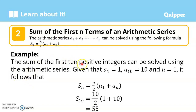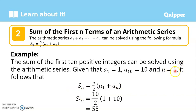Example: the sum of the first 10 positive integers can be solved using the arithmetic series formula. Given that A sub 1 equals 1, A sub 10 equals 10, and n equals 10, it follows that S sub n equals n over 2 times (A sub 1 plus A sub n). So we are looking for the first 10 positive integers: 1, 2, 3, 4, 5, 6, 7, 8, 9, 10.